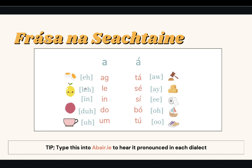'Le' has a short E and it's pronounced like the 'le' in lemon. 'Le' means 'with' in Irish. 'In' in Irish has a short I and it means 'in' as well — in a specific context in Irish — and it is pronounced exactly like 'in' in English. 'Do' means 'for' or 'to' in Irish and because it's a short O, it's just 'duh,' like the 'do' in dot. And then the U in 'um' is short, so it's just 'um,' like the U in cup.